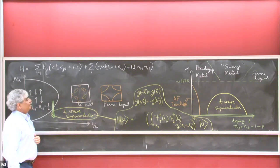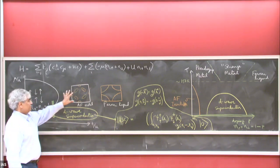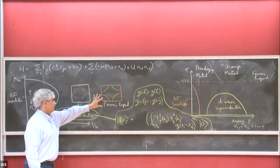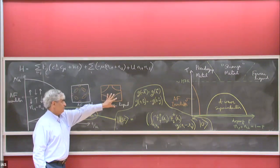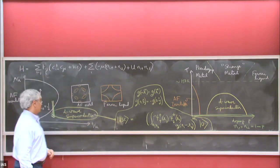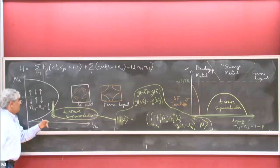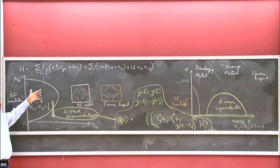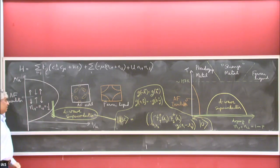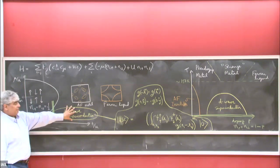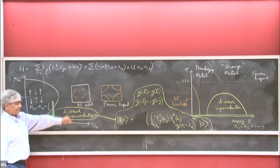Furthermore, we took these metallic states — starting either from the Fermi liquid or from the onset — and looked at what happened when you change the density away from half filling. From both approaches we ended up with a D-wave superconductor.